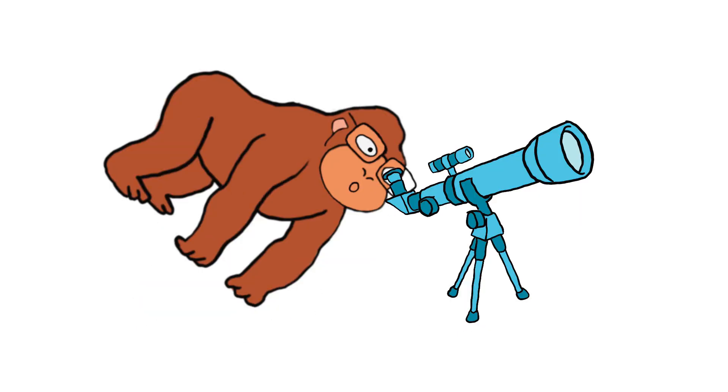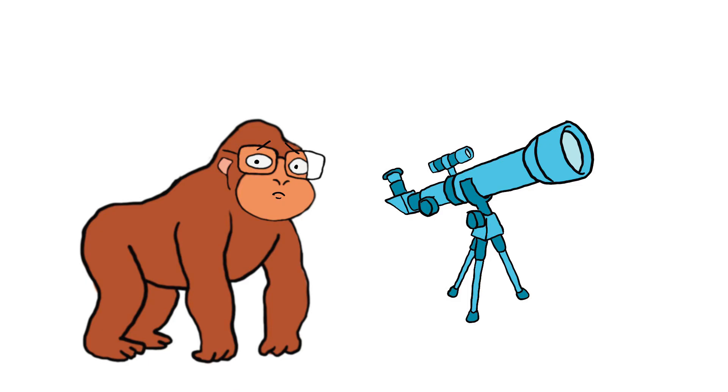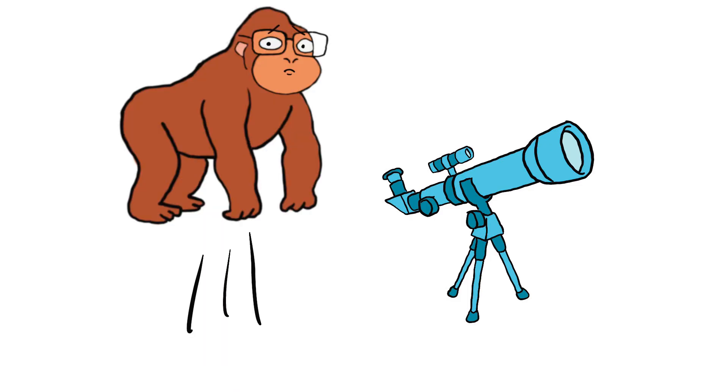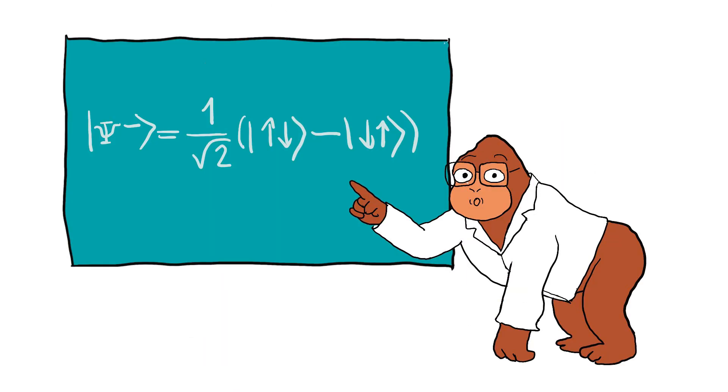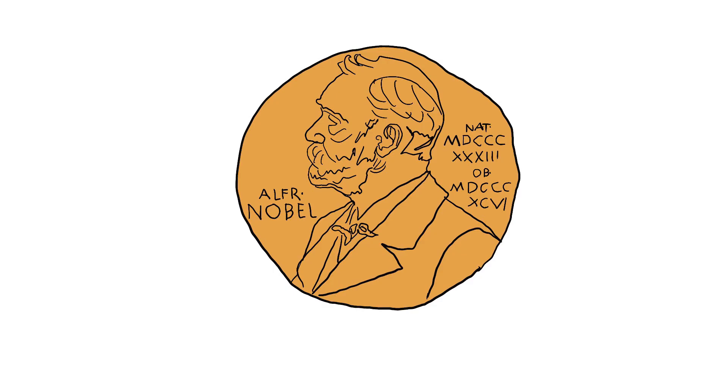Monkey turns the telescope toward the laboratory. Small photon pairs are sent. And the detectors click. And Monkey sees, Entanglement is real. The scientists who conducted this research won the Nobel Prize in physics.